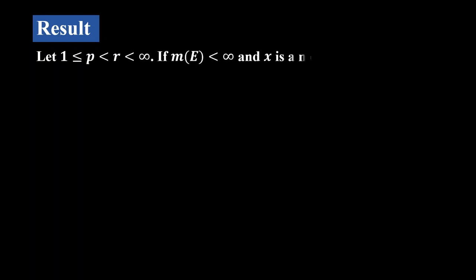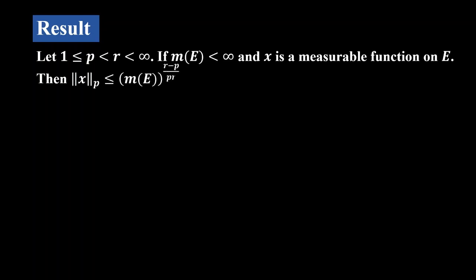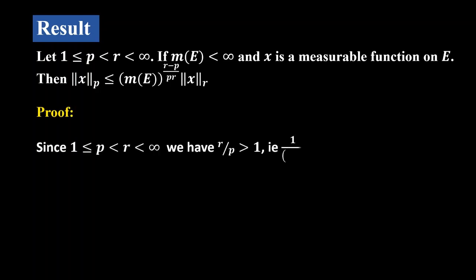Let 1 ≤ p < r < ∞. If M(E) < ∞ and x is a measurable function on E, then ‖x‖_p ≤ M(E)^((r−p)/pr) · ‖x‖_r. The proof is very simple. Since 1 ≤ p < r < ∞, we have r/p > 1, so 1/(r/p) < 1.